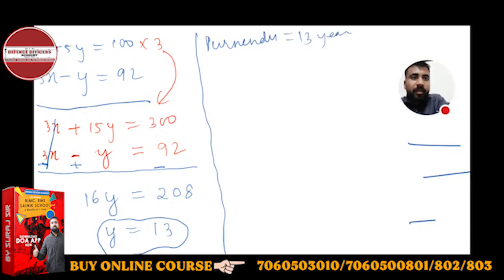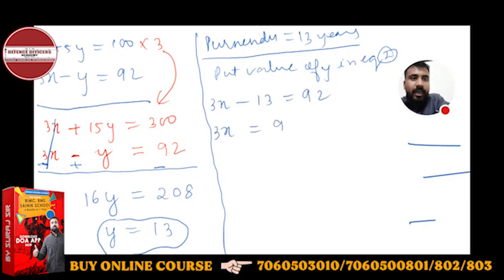We need Karan and Hukum also, so put the value of Y in any of these equations. Suppose in equation 2. So this is 3X minus Y, minus 13 is equal to 92 and 3X is equal to 92 plus 13, so 3X is equal to 105 and X is 35.